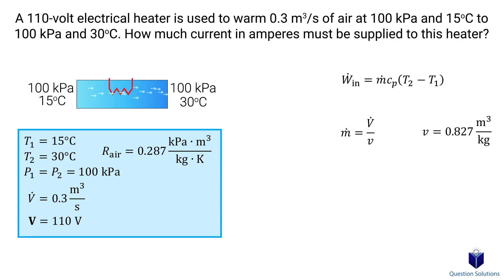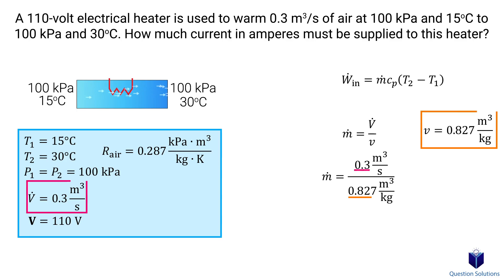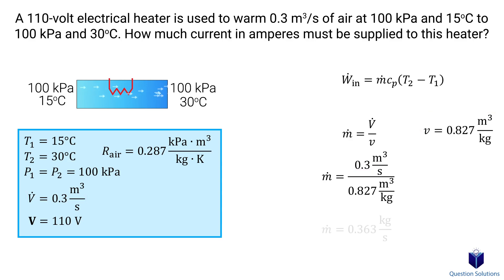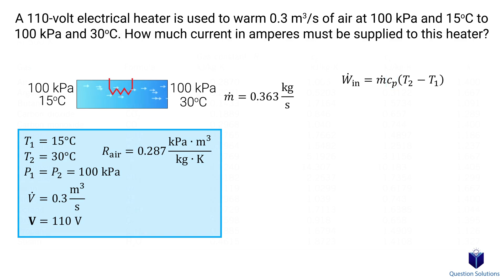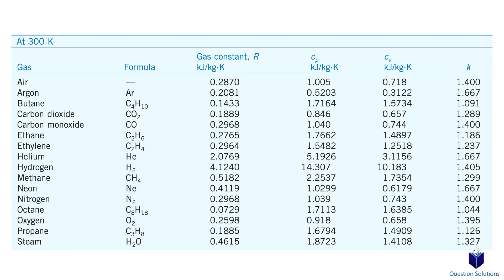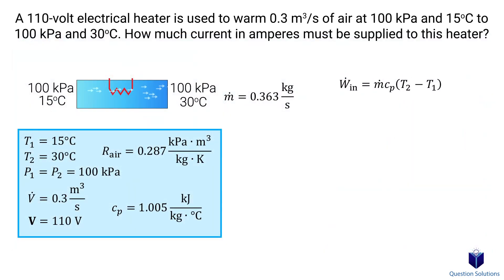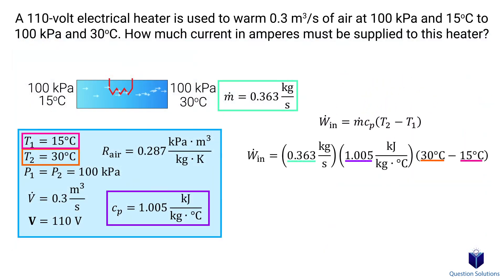Now that we have the specific volume, we can go back to the mass flow equation and plug our values in. Solving gives us the mass flow. Next we need to find the specific heat of air, which we can find from a table. Now we have all the pieces, so let's start plugging values in.